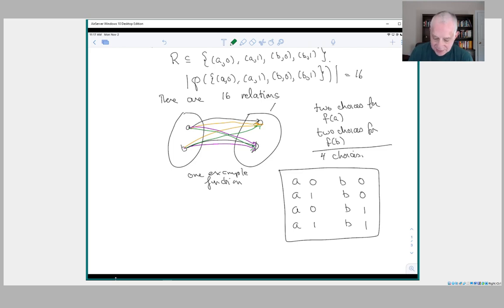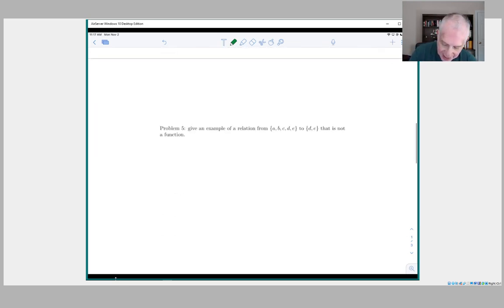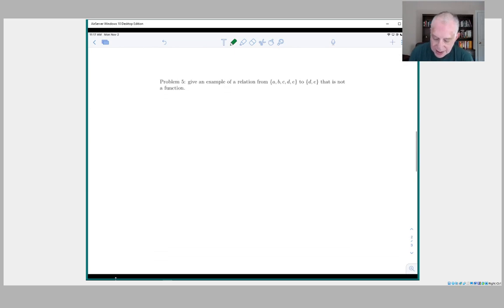Okay, that's the first problem to look at. The next one asks, give an example of a relation on this set A, B, C, D, E to D, E that is not a function.